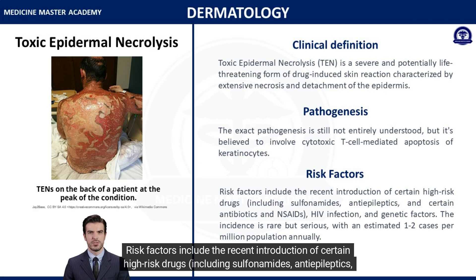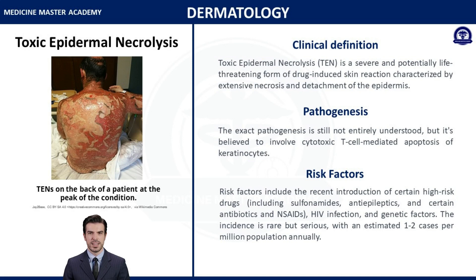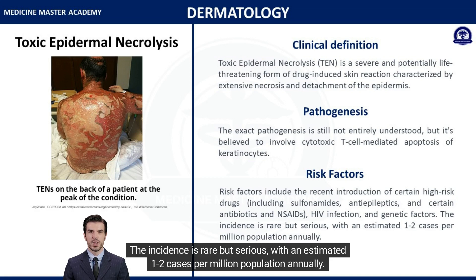High-risk drugs include sulfonamides, anti-epileptics, certain antibiotics, and non-steroidal anti-inflammatory drugs. Additional risk factors include HIV infection and possibly genetic factors. The incidence is rare but serious, with an estimated 1–2 cases per million population annually.